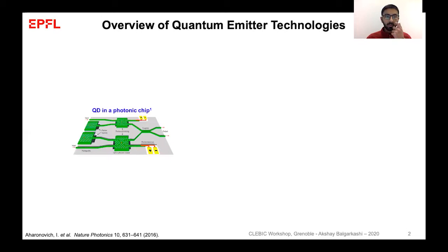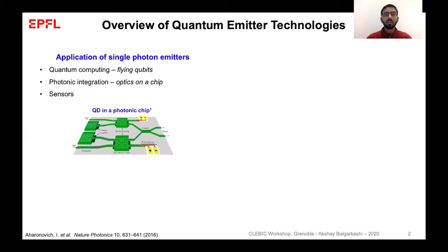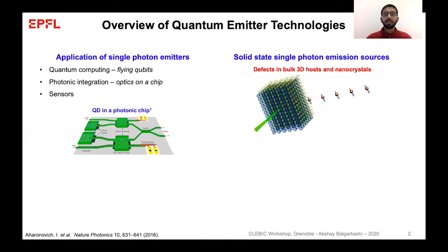To start with, I would like to show the diagram of a typical photonic chip which consists of various modules like single photon sources, photonic crystals, waveguides, couplers, and photon detectors. What we are focusing on is single photon emitters using quantum dots which find applications in quantum computing, photonic integration, and so on.